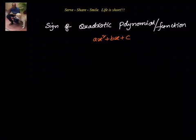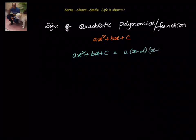Let us say ax² + bx + c is a quadratic polynomial and alpha and beta are the zeros of the quadratic polynomial. Then we know that we can write ax² + bx + c equal to a times (x − alpha) times (x − beta). Let us also consider the case that alpha is always greater than beta.